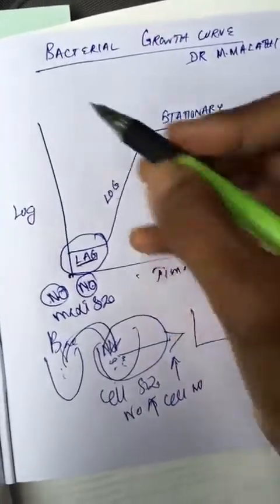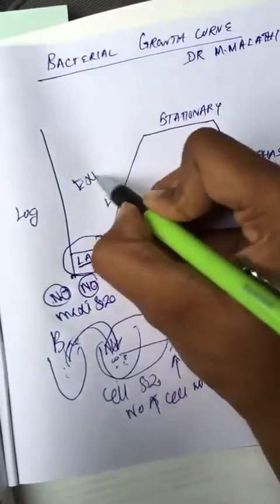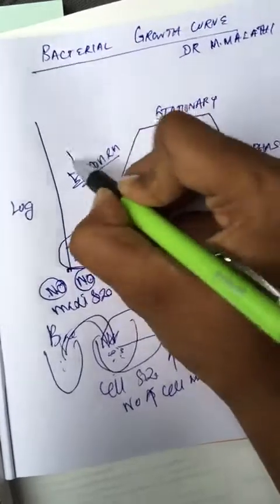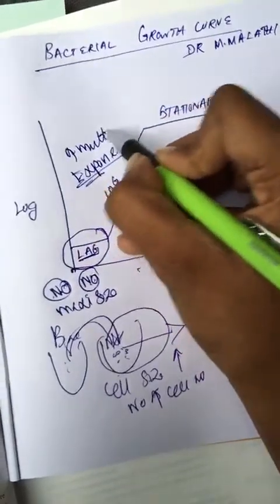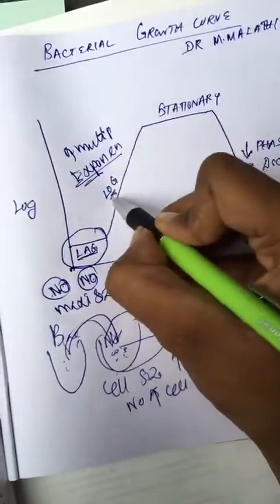Then log phase. Log phase is otherwise called exponential phase. Exponential in the meaning itself is increased multiplication. Remember that log phase has increased multiplication.